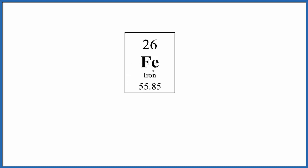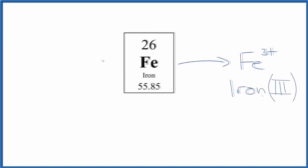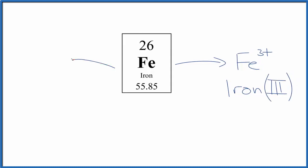But iron does form two different ions that you should be aware of. First of all, we have the iron three ion, Fe three plus, and we call that iron III. We also could have the iron two ion. That's Fe two plus. And we call that iron II.